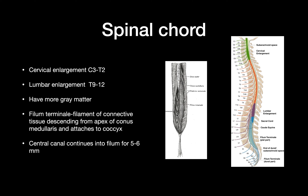The parts of the spinal cord that are enlarged are in the cervical region and in the lumbar region. Those places have more gray matter because nerves are going all the way up into the brain and supplying the lower limbs. The gray matter is increased to increase the amount of information processing.